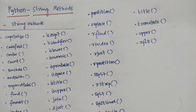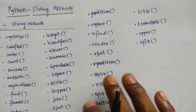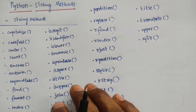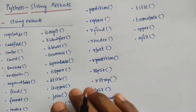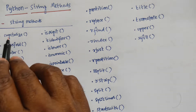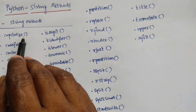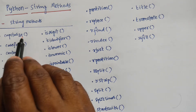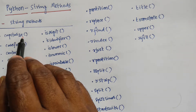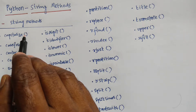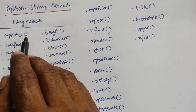What are the various types of string methods? The first one is capitalize. What is the role of capitalize? It converts the first character to uppercase.